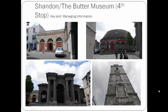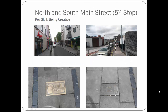Our penultimate stop is North and South Main Street. Along the way, students will again be asked about building and land use and how many bridges they pass. On North and South Main Street we won't stop so much as keep walking. Students will be tasked with taking pictures of the flagstones shown in the slide — each flagstone relates to a lane that was once there, and each name has a clue as to what was done in that lane. The task is for students to come up with their own answers for what each lane might have been used for. This task is designed with the key skill of being creative in mind.